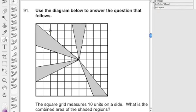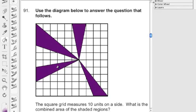Here's a box and in this box there are these four shapes and it says the square grid measures 10 units on a side. What is the combined area of the shaded region? They want you to do this in about two minutes or less - find the combined area of this shape, this shape, this shape and this shape.